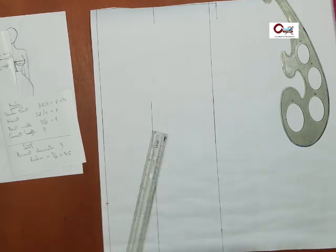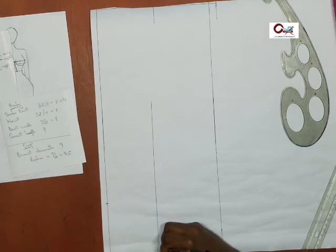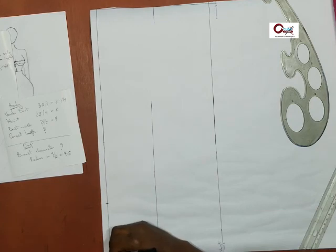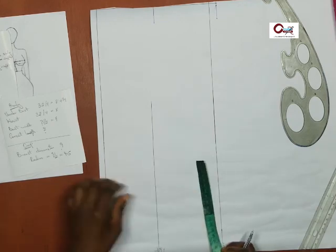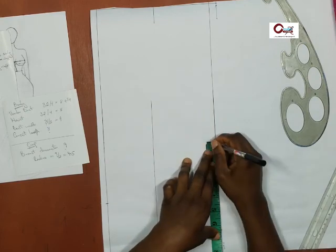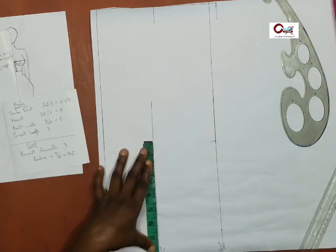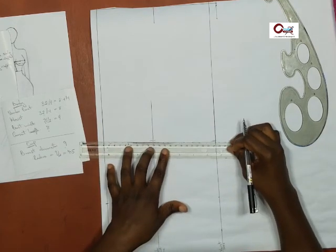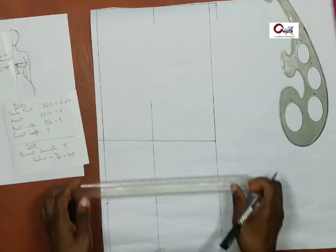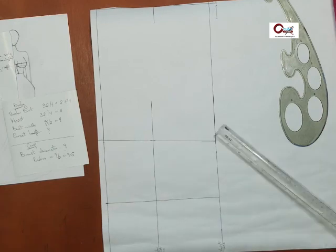What is left is three and a half. So from bust point, I mark three and a half going down. Draw it into a line. That three and a half marking is the underbust by. So on the waistline, I go there and mark my eight inches. On the underbust, eight and a quarter. I connect the two lines and extend it to the bust point line.